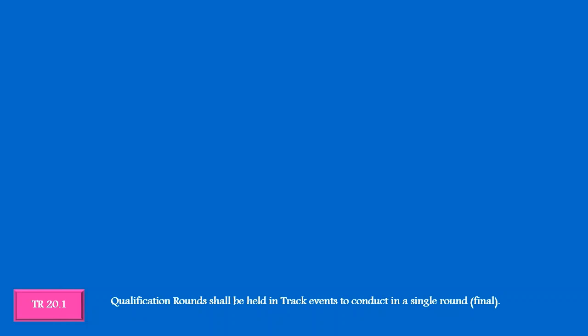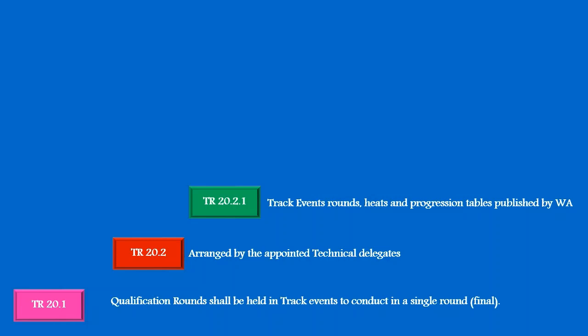Technical Rule 20.2 says the qualification round for the track event shall be arranged by appointed technical delegates. Technical Rule 20.2.1 says to arrange rounds and heats, we have to use track events rounds, hits, and progression tables published by World Athletics.